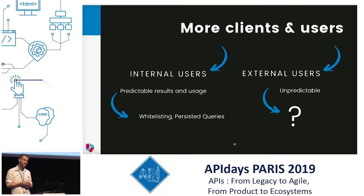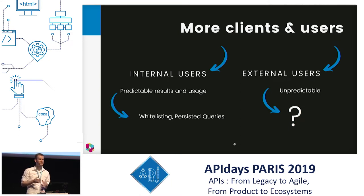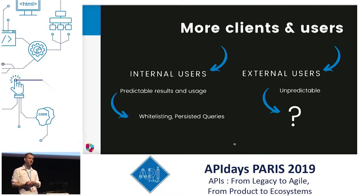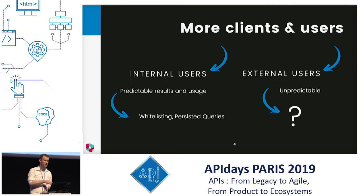If you have an internal API, you're already used to your users — mostly internal developers you can communicate with and predict results from. You can do things like define static queries in your front-end and use a build process for whitelisting or hashing queries, persistent queries. But for external users it's unpredictable — you don't really know what you're going to get, especially with a GraphQL API.